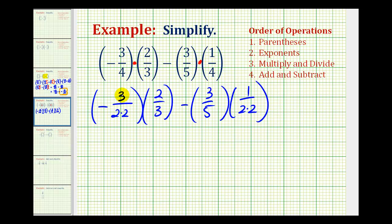So now we can see there's a common factor of three over three here that simplifies to one. And two over two also simplifies to one.